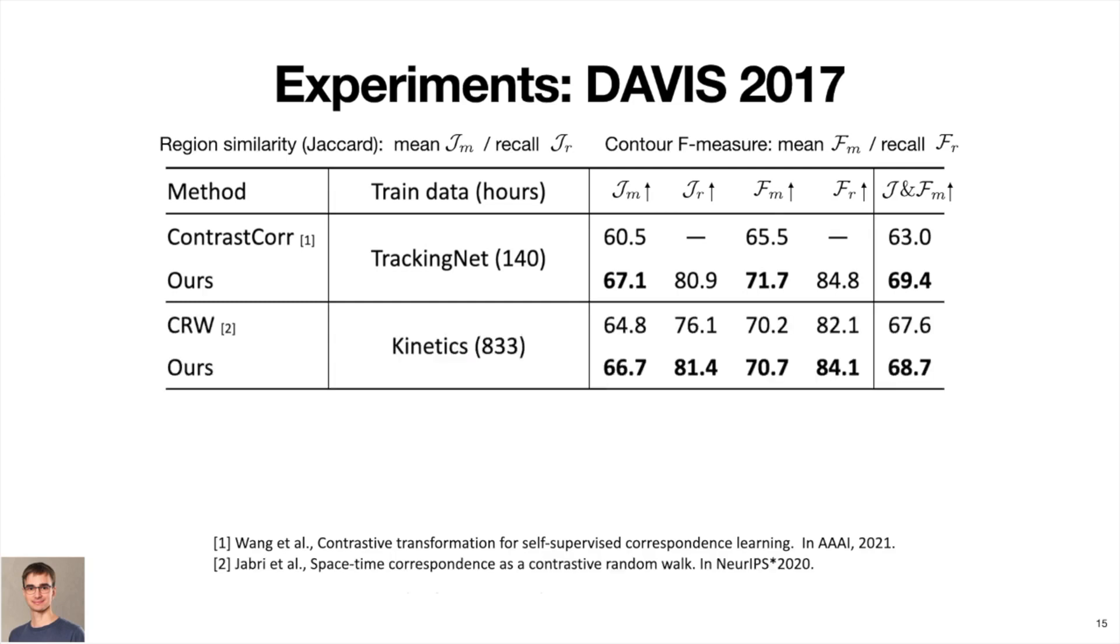When trained on Kinetics, we compared to the contrastive random walk approach by Jabri et al., which relies on time cycle consistency. We improved their result by 1.1%.